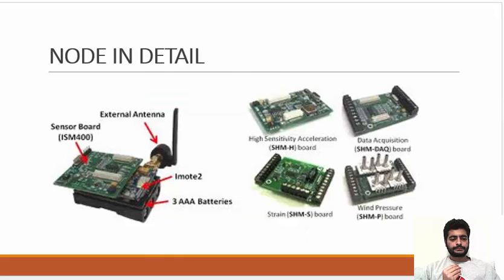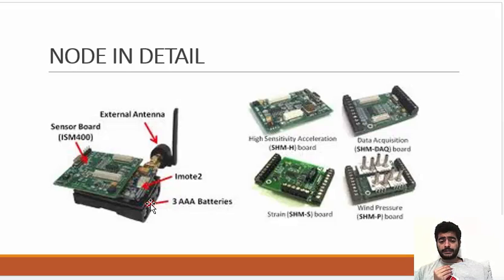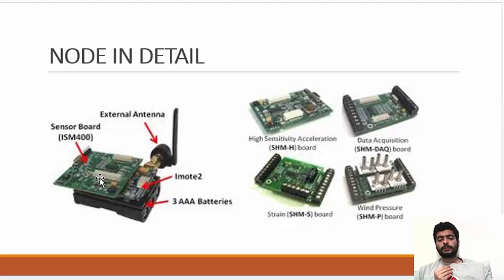Now the node is shown in detail. Here is the antenna and an external antenna connector. Here is a modem where the program is going to be located. There are AAA batteries — as mentioned, you can also use a cylindrical battery instead of chip memory. This is the sensor board, which is the motherboard on which all connections and wires are plugged so it can work, using copper wires depending upon the purpose.